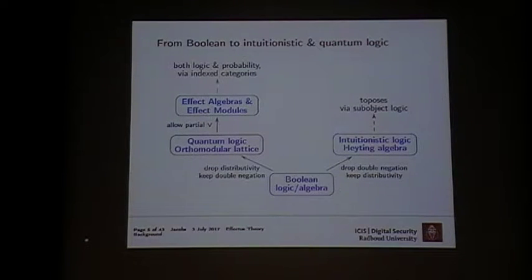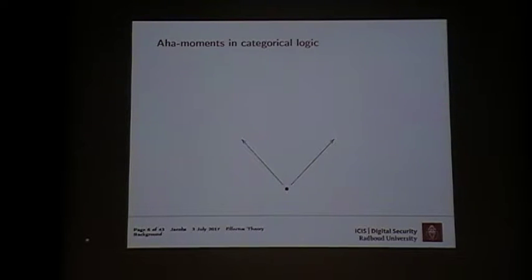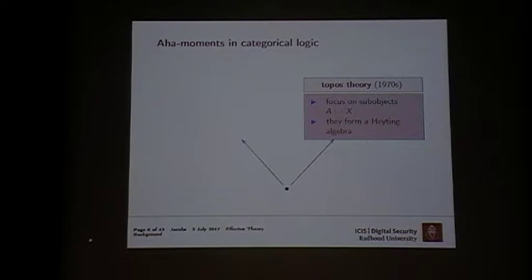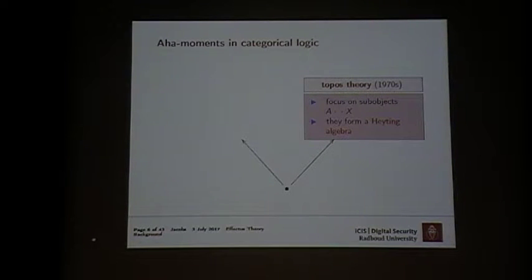These effect algebras give rise to a logic and probability theory which bears formal structural resemblance to what's going on in Topos theory. It's the line of work on the left that I will be talking about. It's by far not as developed as the intuitionistic line on the right, but it's certainly worthwhile to expand here. If I look at things from a real distance, you could ask: what were the real starting points of Topos theory? People there focused on sub-objects; the logic was spatially oriented.